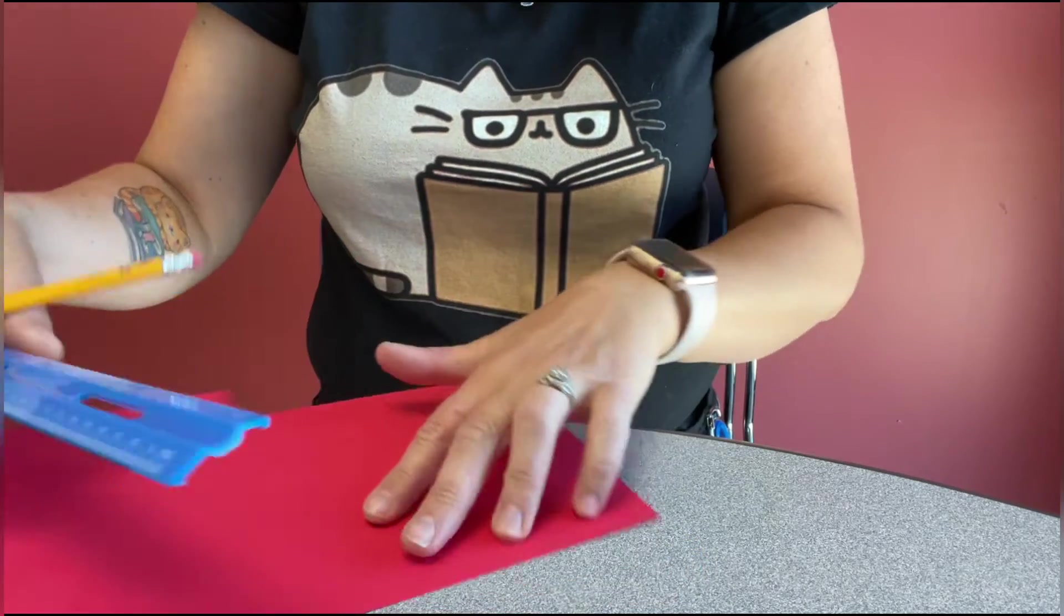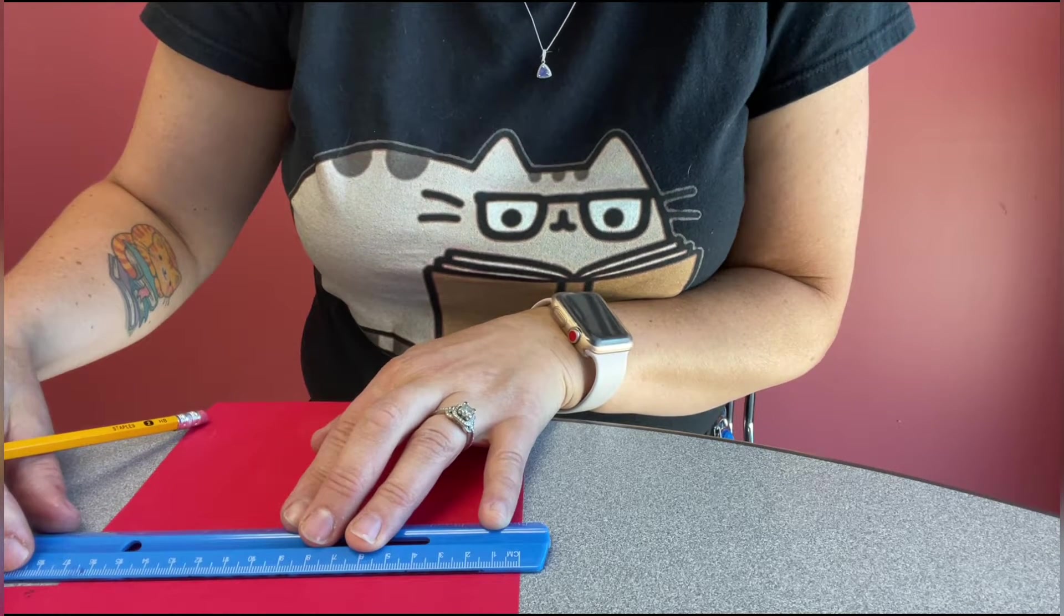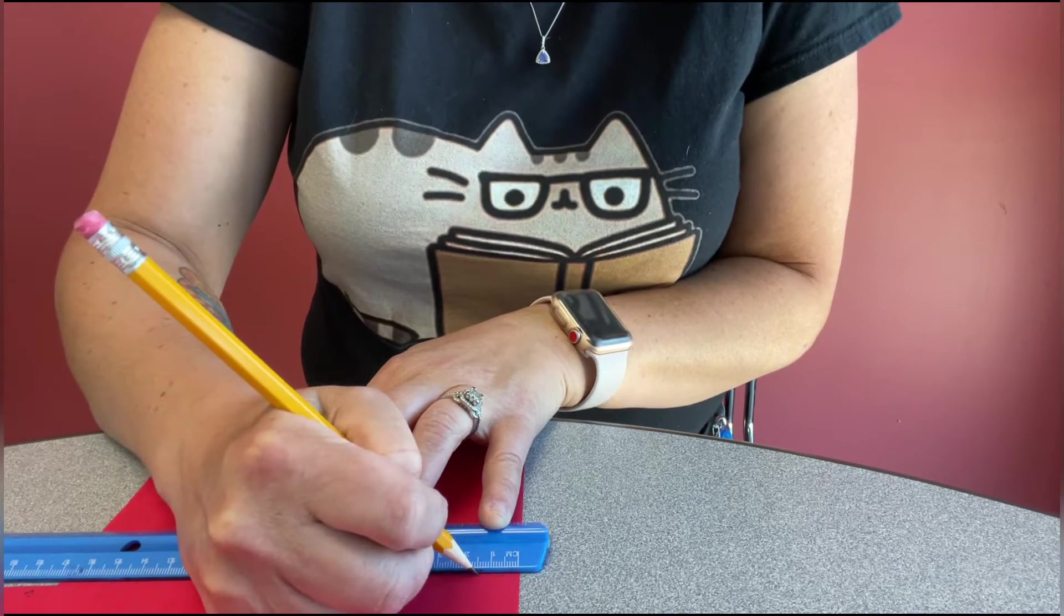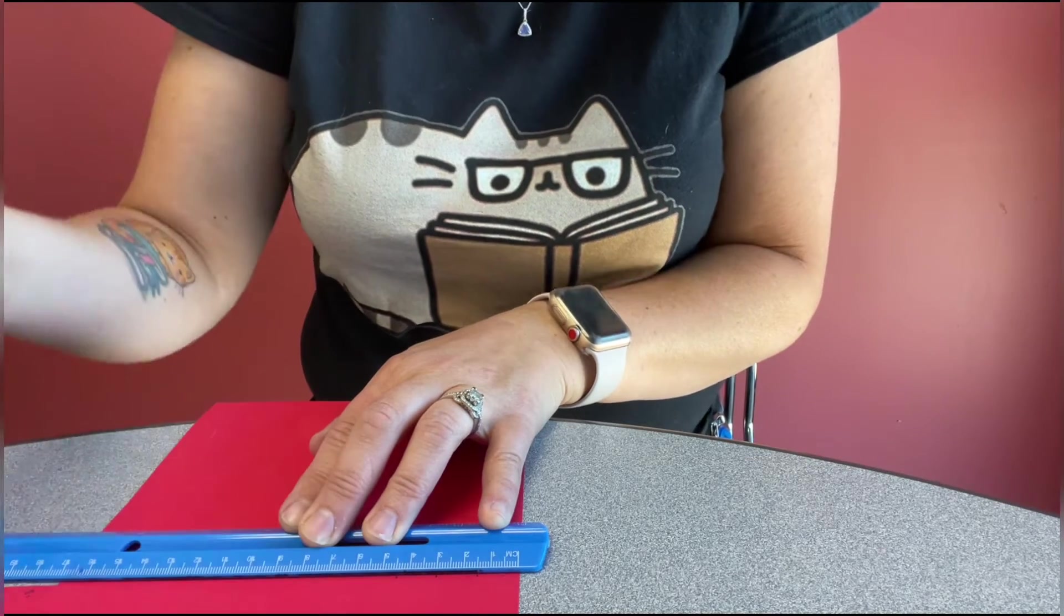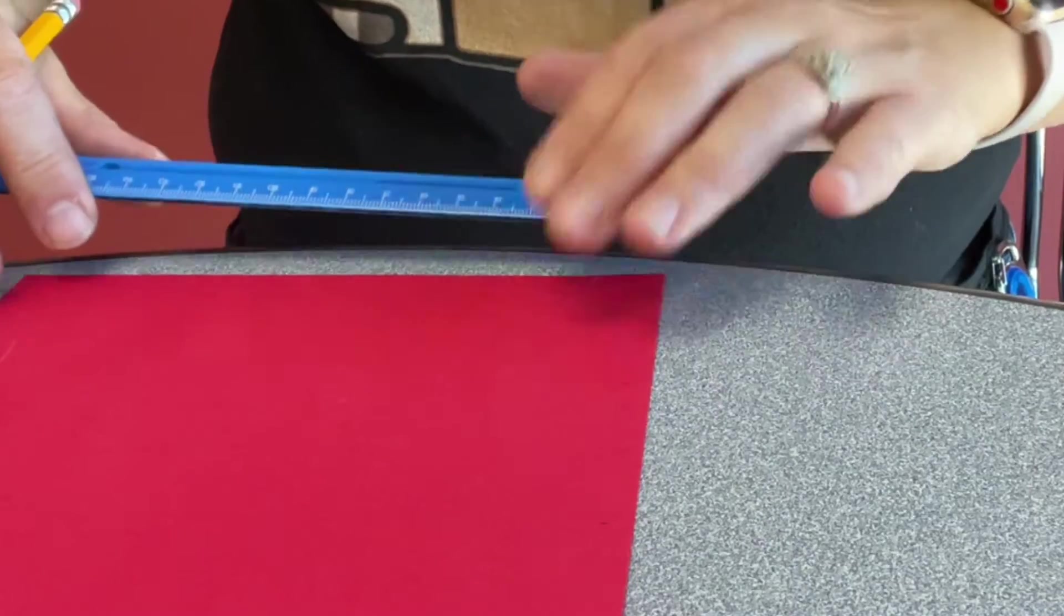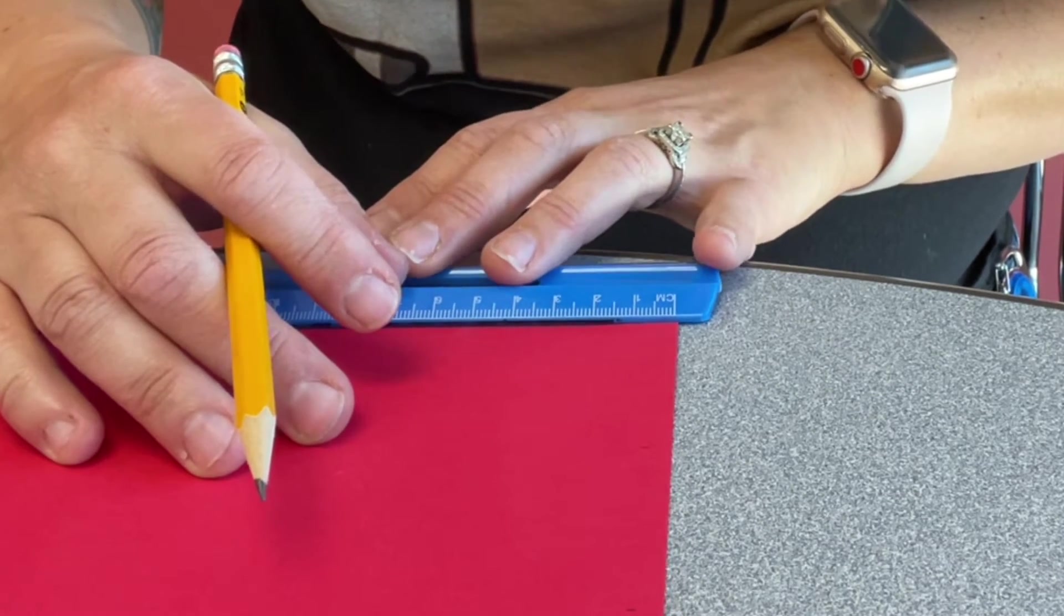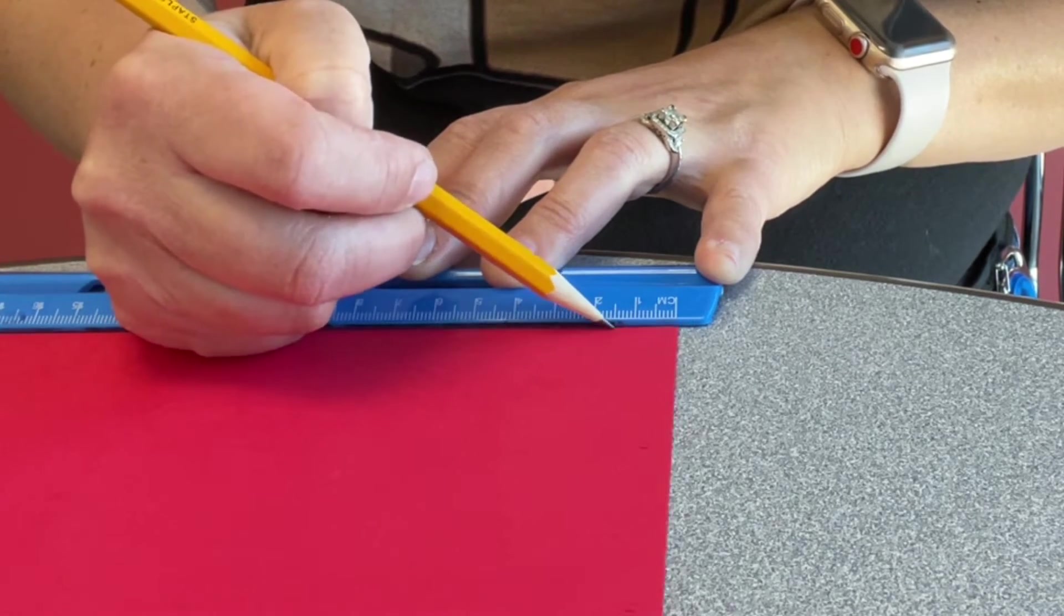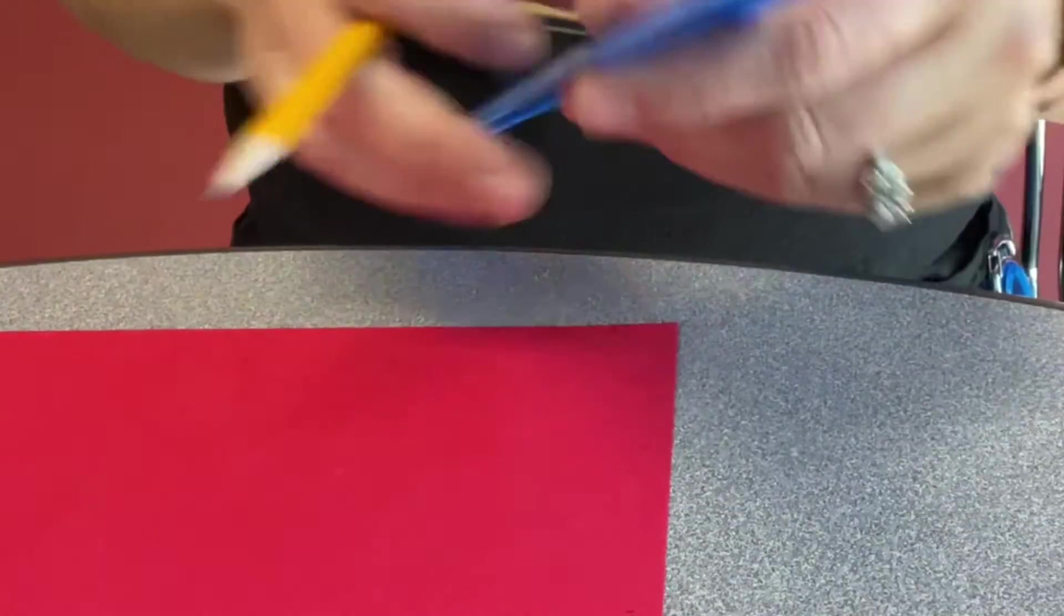I'm going to turn my paper now and put my ruler at the edge again along where my little marks are, and this time I'm going to do 1.5, 3, and 4.5 centimeters. Make sure in centimeters not inches. I'm also going to measure my 1.5 centimeters down on this side too, so I'm lining it up at the edge and then 1.5, 3, and 4.5.